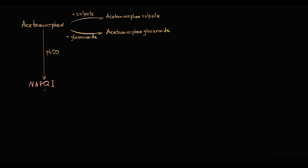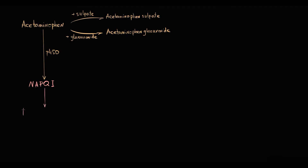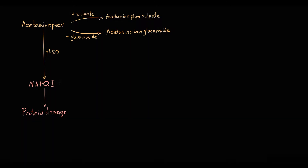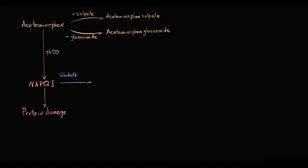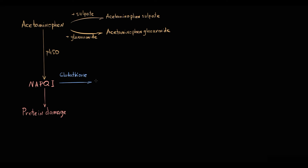N-acetylbenzoquinonimine is an extremely dangerous substance that covalently binds to cellular proteins and totally disrupts their structure and thereby their function. Because it is so dangerous, it must be immediately detoxified, and this detoxification is provided by glutathione. Glutathione rapidly conjugates with N-acetylbenzoquinonimine with formation of a harmless substance, mercapturic acid, that can be excreted into the urine.